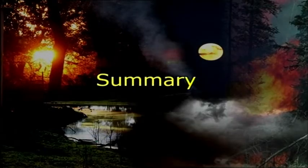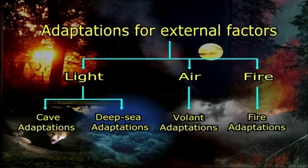Thus, there are many organisms including plants and animals that possess specific adaptive characteristics which make them fit to survive in extreme situations in nature. In this lecture, the most important external environmental factors to which organisms adapt — light, air, and fire — were discussed in detail. In terms of light adaptations, we covered cave dwellers and organisms adapted to the deep sea environment. We also studied various volant adaptations in relation to the external environmental factor air, and got a brief idea of fire adaptations of plants and animals.